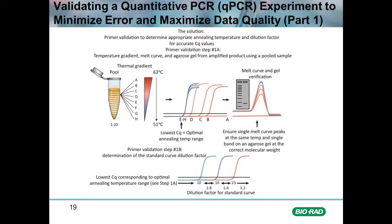On a 96-well plate containing 12 columns, that permits the testing of 12 primer pairs at eight separate temperatures. The recommended temperature range is between 51 and 63 degrees, though this range could change depending on the AT/GC content of the primers. If the primers are predicted to anneal at a temperature lower than around 60 degrees, this 12-degree temperature range should be shifted lower or higher accordingly.